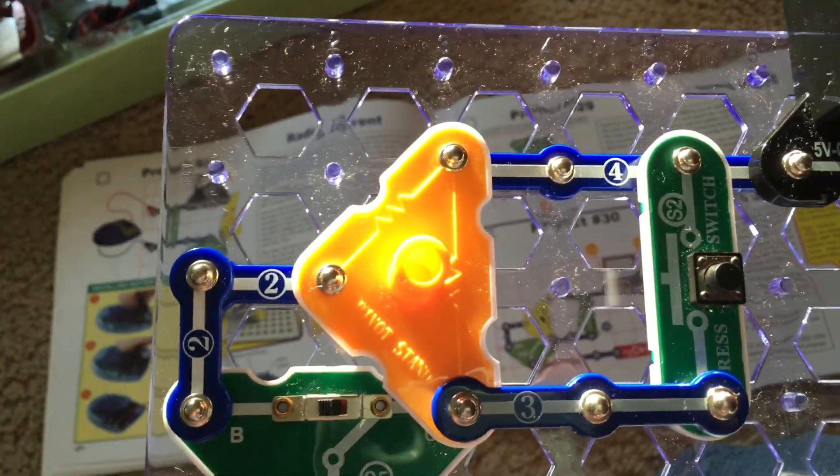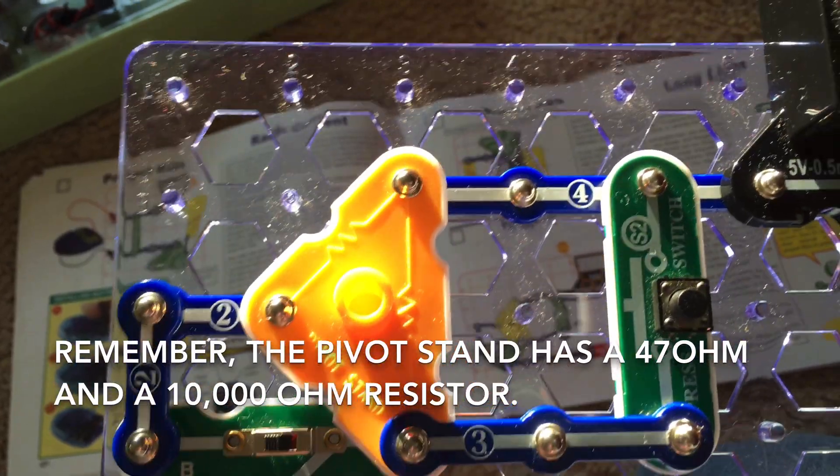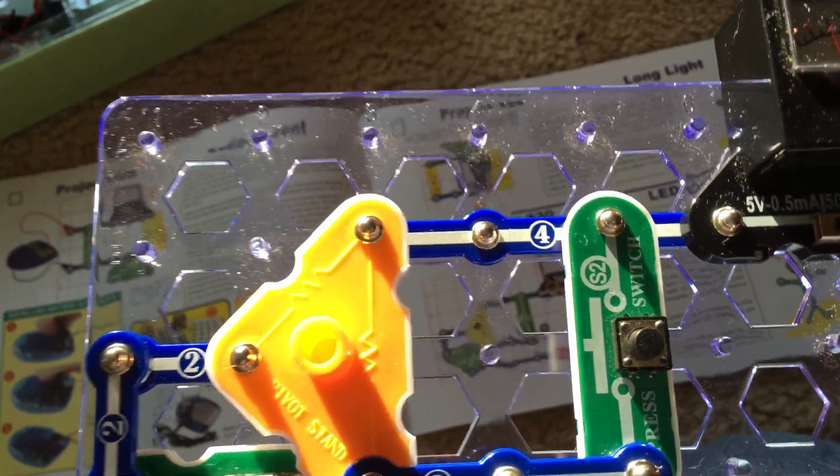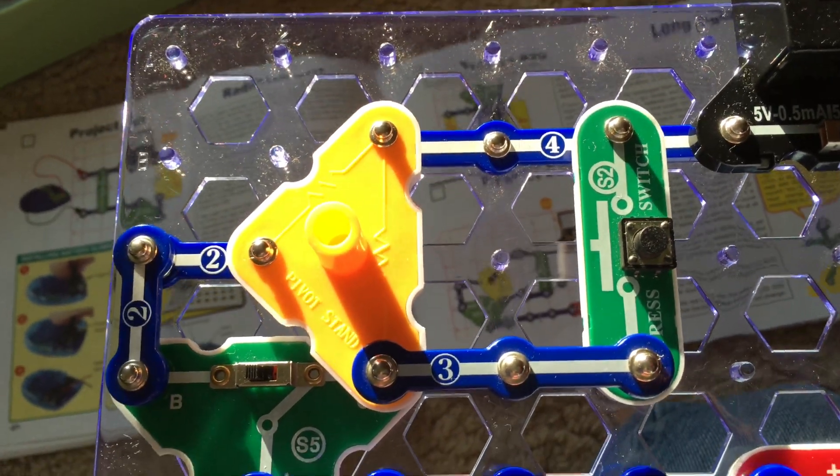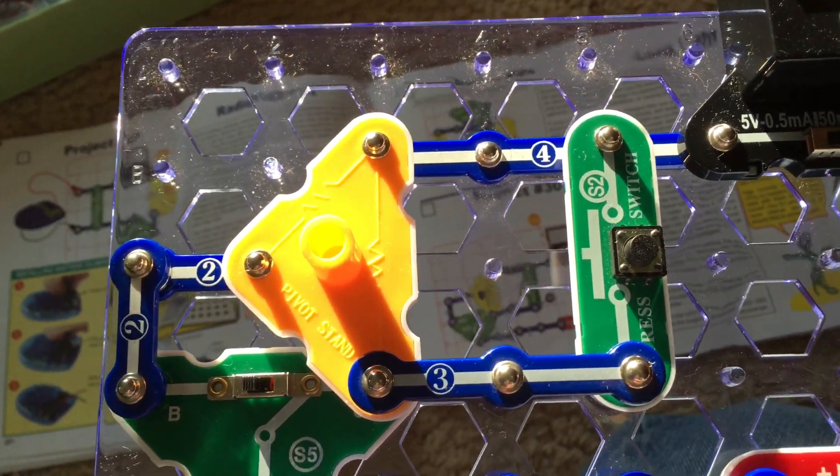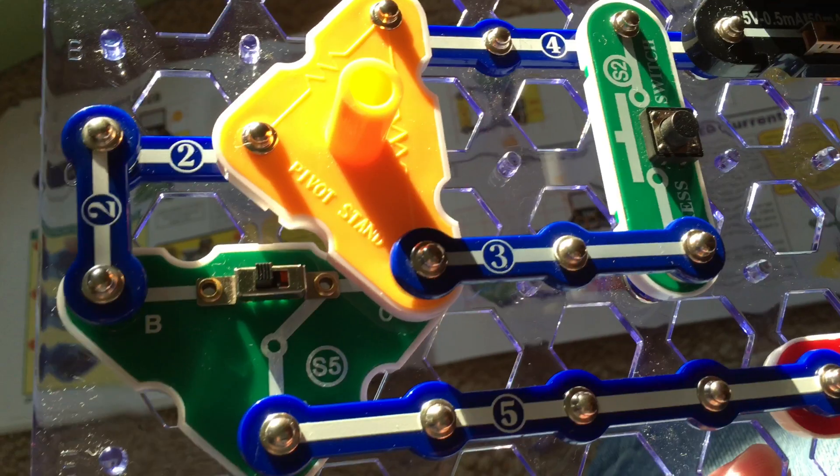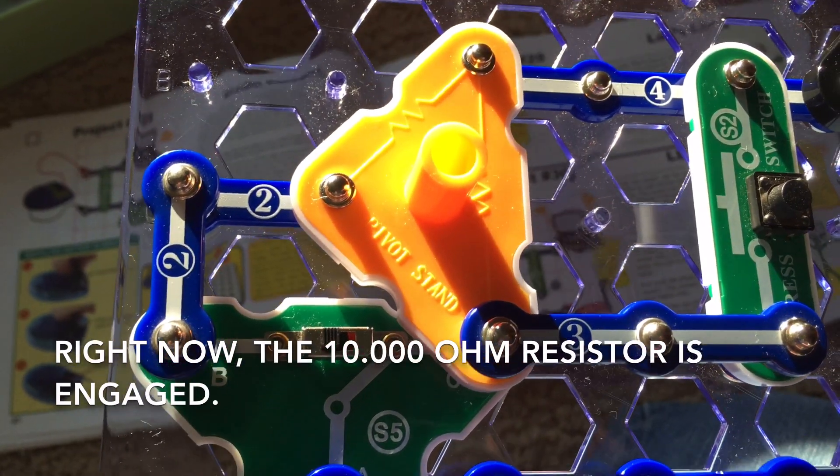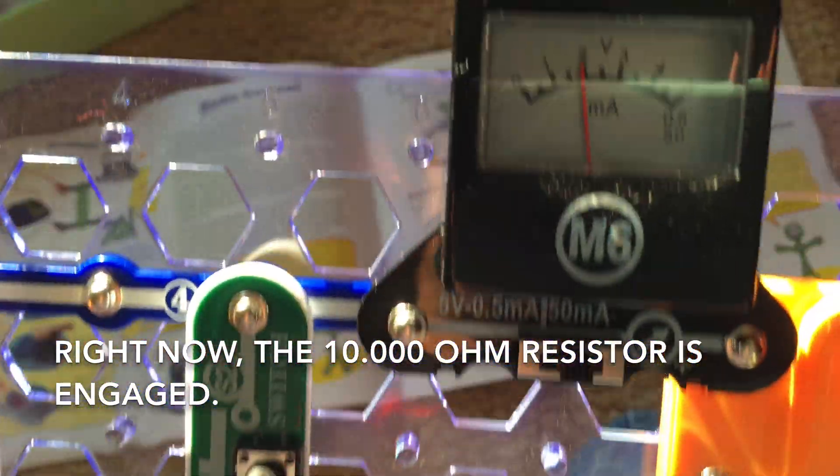The yellow pivot stand has two resistors. One of them is worth 10,000 ohms and the other is worth only 47 ohms. There's a big difference in the power of these two resistors. Right now the slide switch is in the B position and it is allowing the 10,000 ohm resistor to operate.